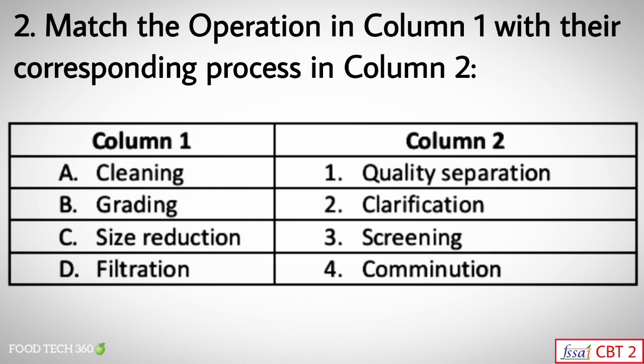Question number two: match the operation in column one with their corresponding process in column two. Column one contains operations such as cleaning, grading, size reduction, and filtration. Column two contains processes like quality separation, clarification, screening, and communication.